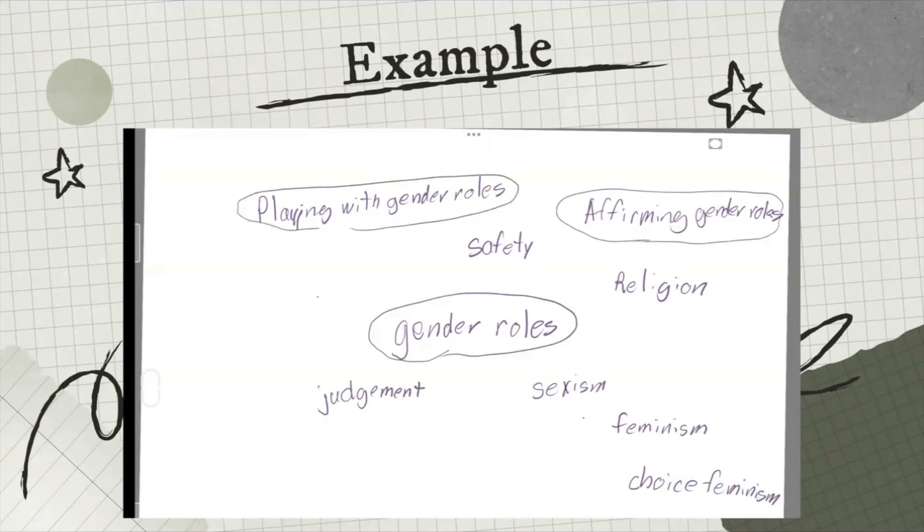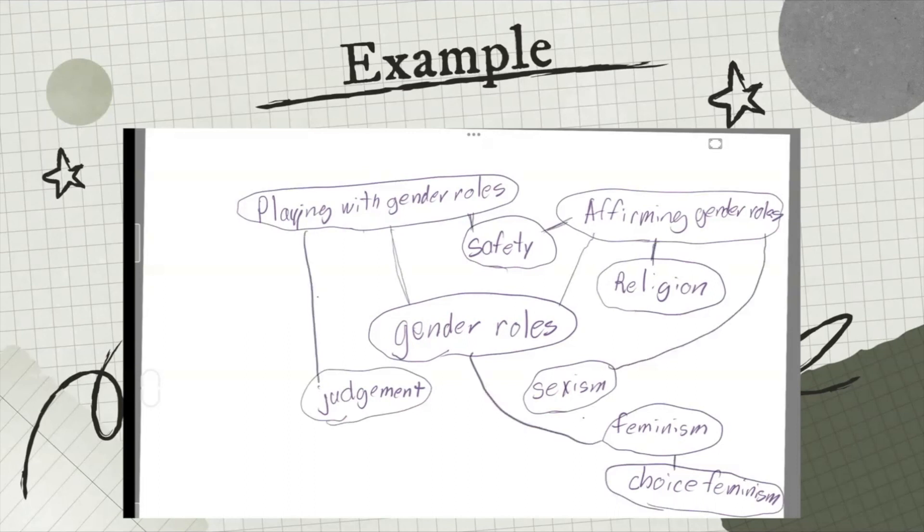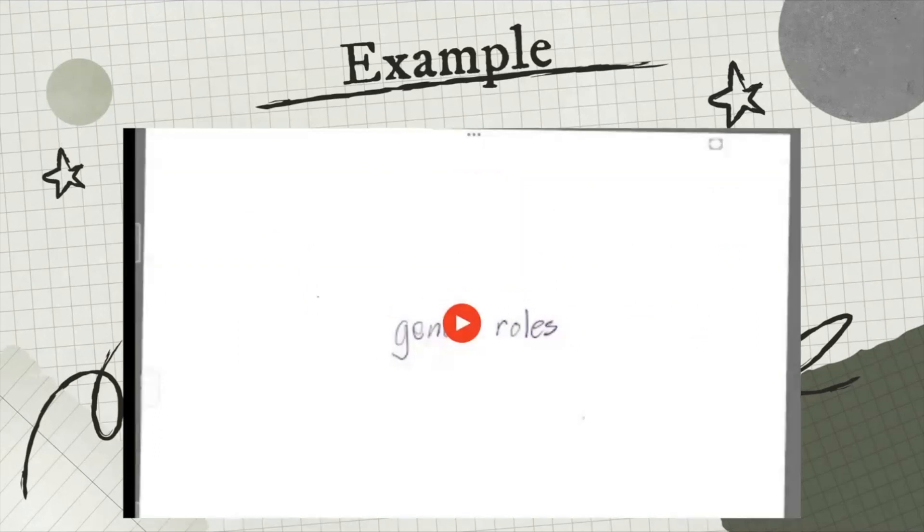Now I'm circling all of my ideas and I'm going to start connecting them together. Notice how safety isn't connected to gender roles but is connected to some of the sub points, and how choice feminism is connected to feminism, and how judgment is connected to two things. That helped me narrow down what should go where and which points were the most important ones.